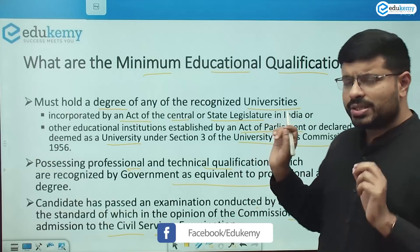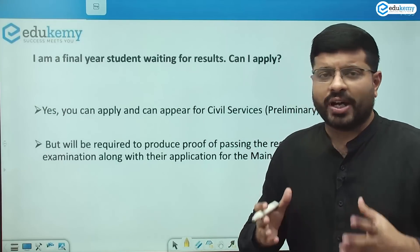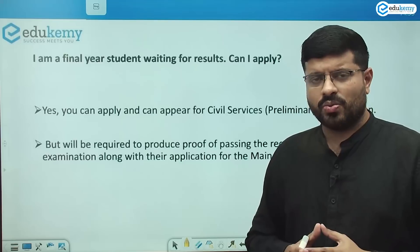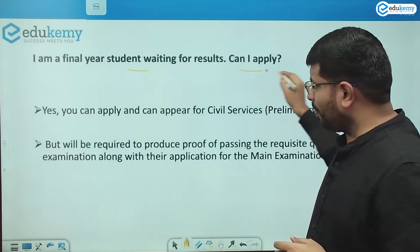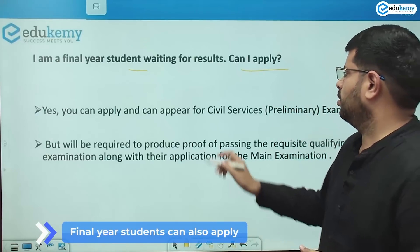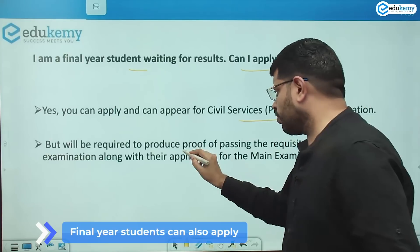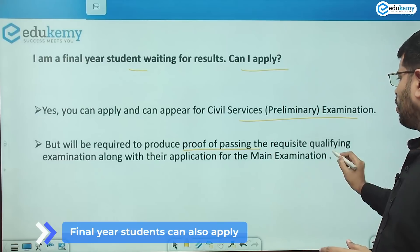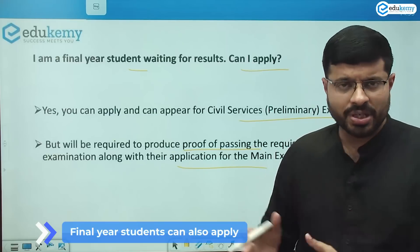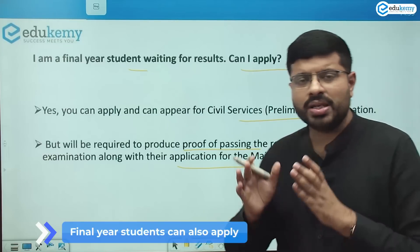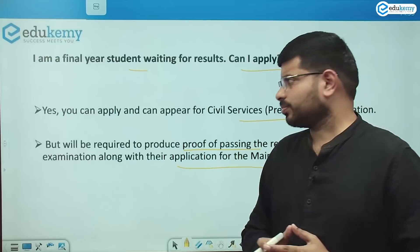Many students in their final year of graduation wonder if they can apply. If you are a final year student awaiting results, you can apply and write the preliminary examination. However, you must produce proof of passing the qualifying examination along with your application for the main examination. If you cannot provide the proof at that stage, your candidature will be considered ineligible.